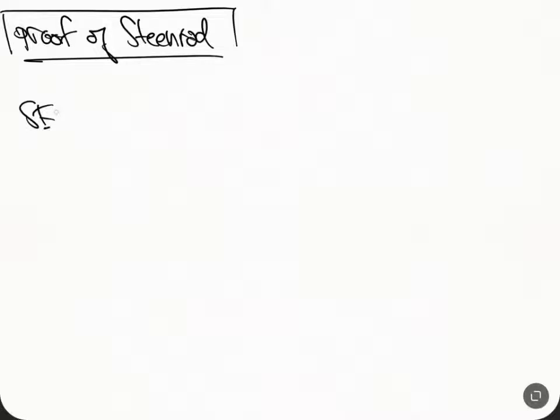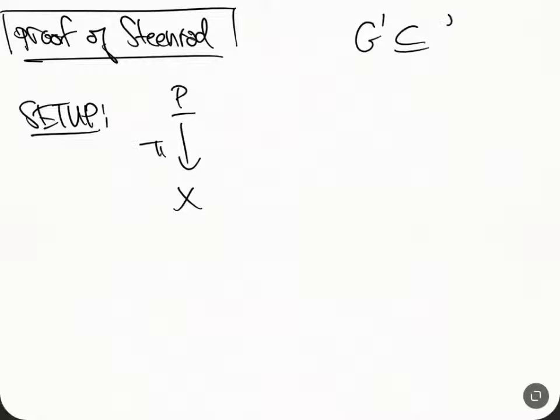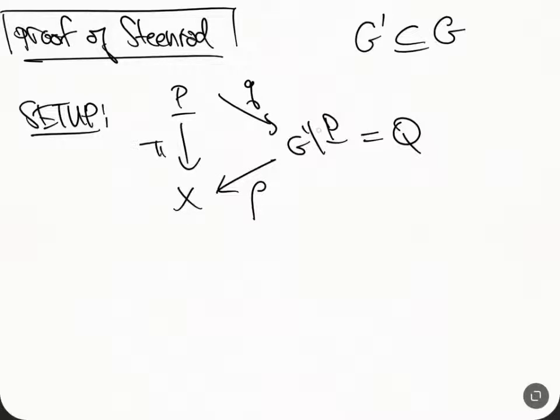Let me remind you what's going on. Here's the setup, and now I'm going to start to talk about the proof of Steenrod's theorem. It's going to come in with a couple of lemmas. So again the setup: we're going to take P cross π, and we had this inclusion of subgroups. This was a principal G-bundle, and we're going to take this quotient map.